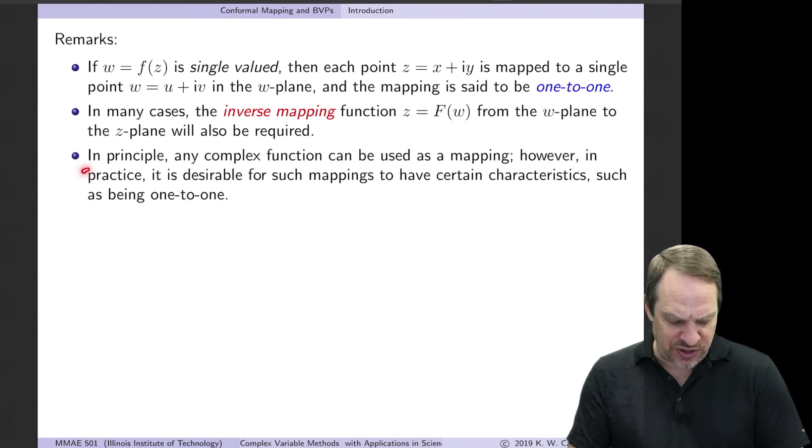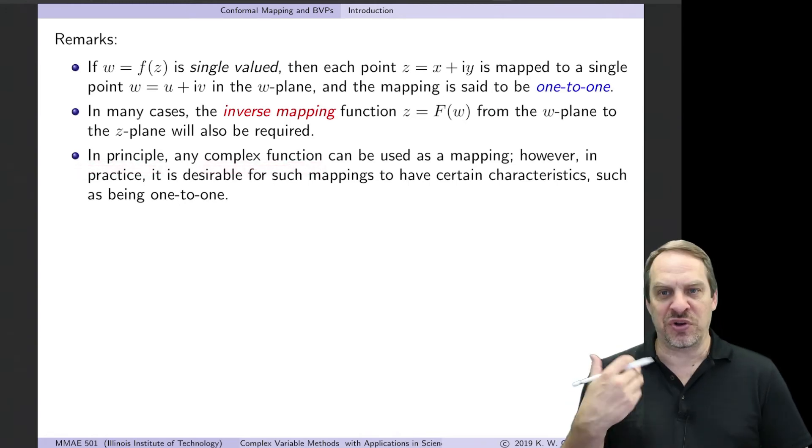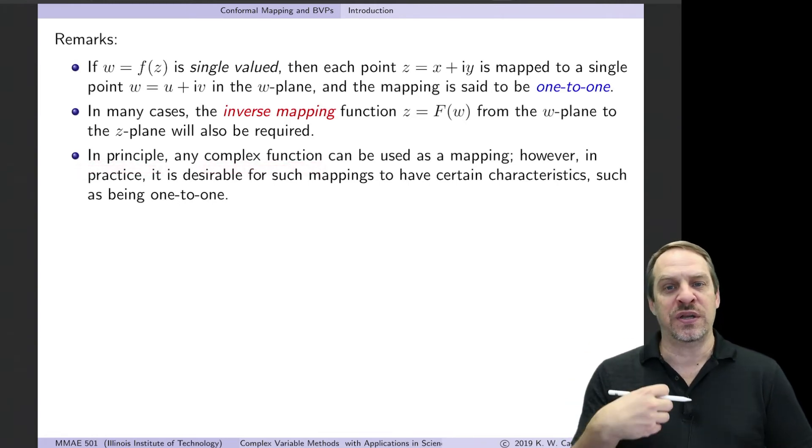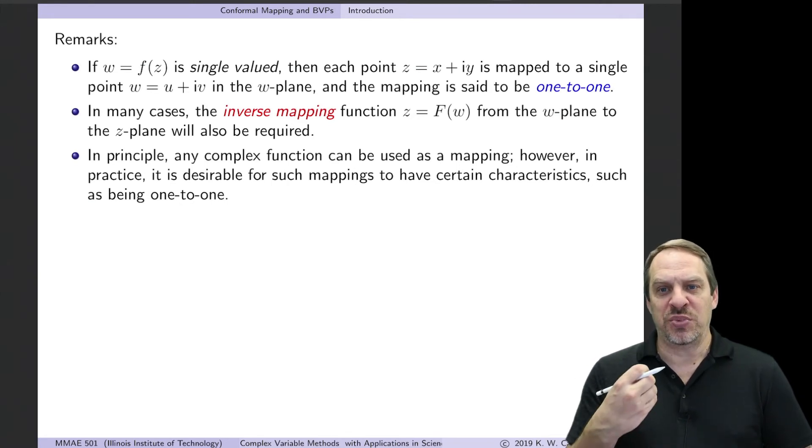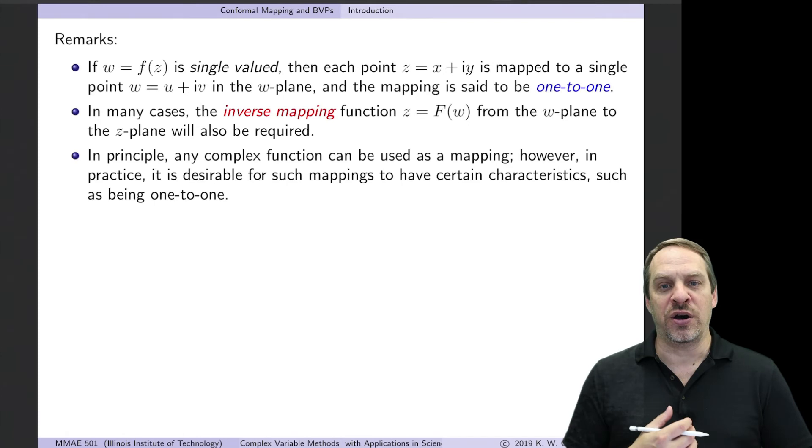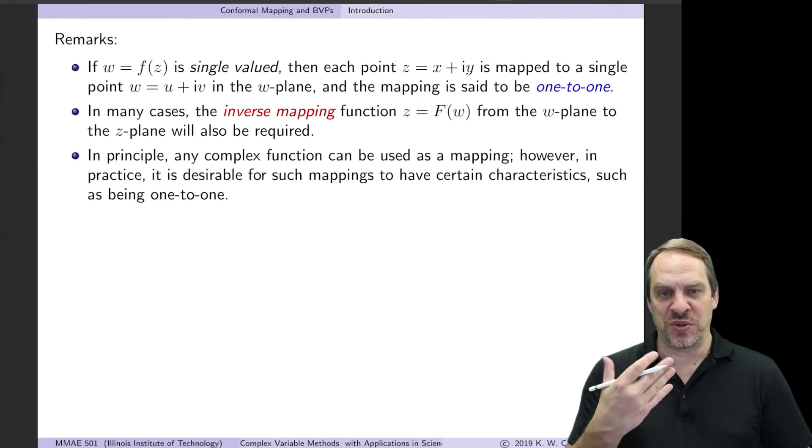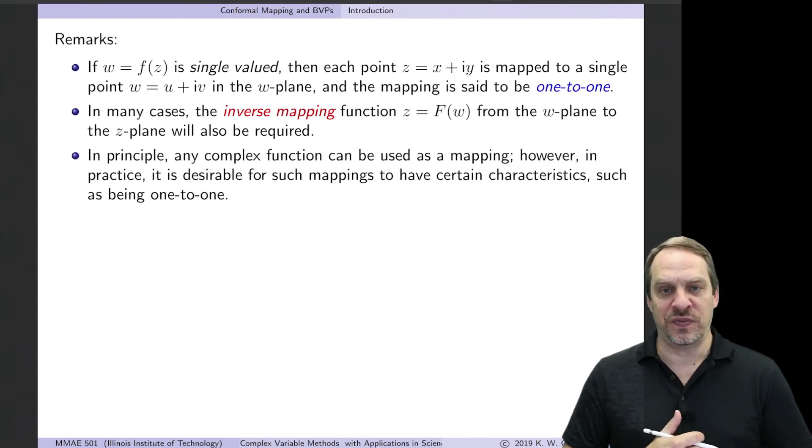So in principle now, any complex function could be regarded as a mapping. I can put in a z, evaluate f(z), and get out the corresponding w, the image w. But there are, as we just mentioned, some properties, some characteristics that we would like to impose on our mappings in order for them to be useful in the context of solving physical problems.